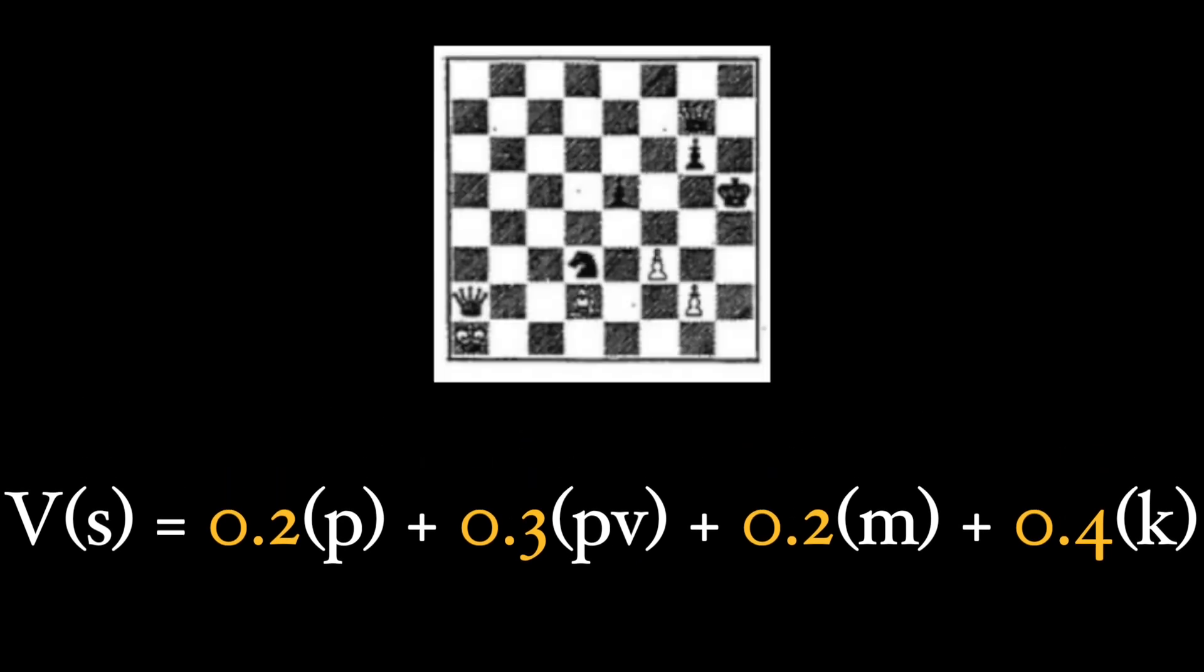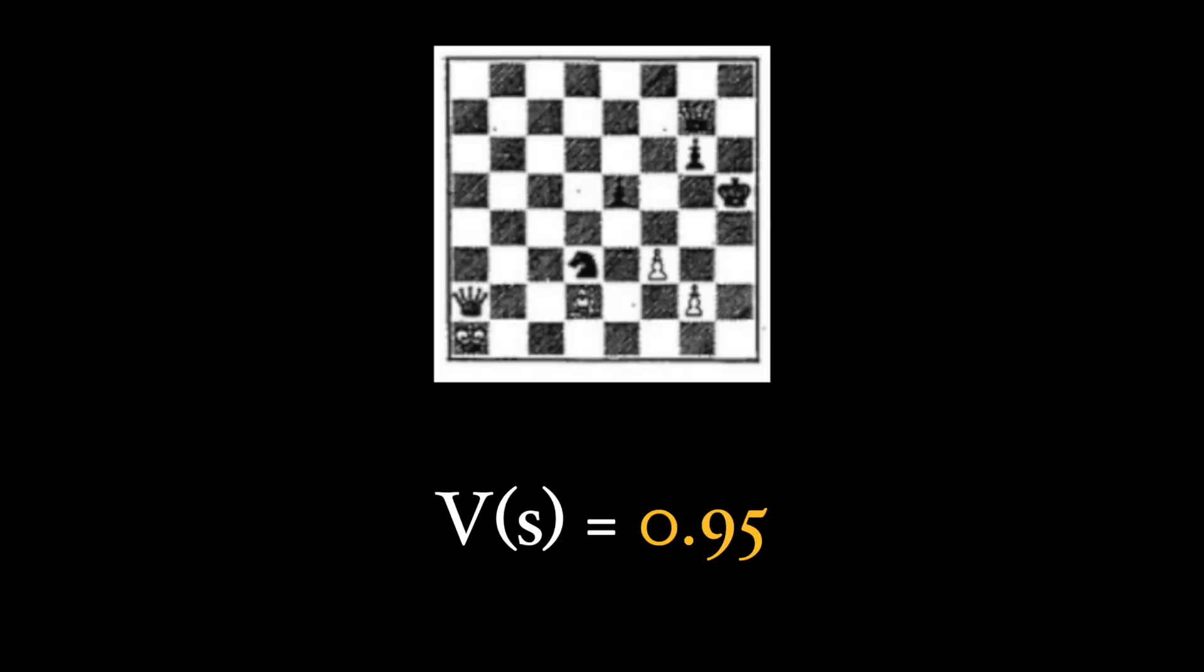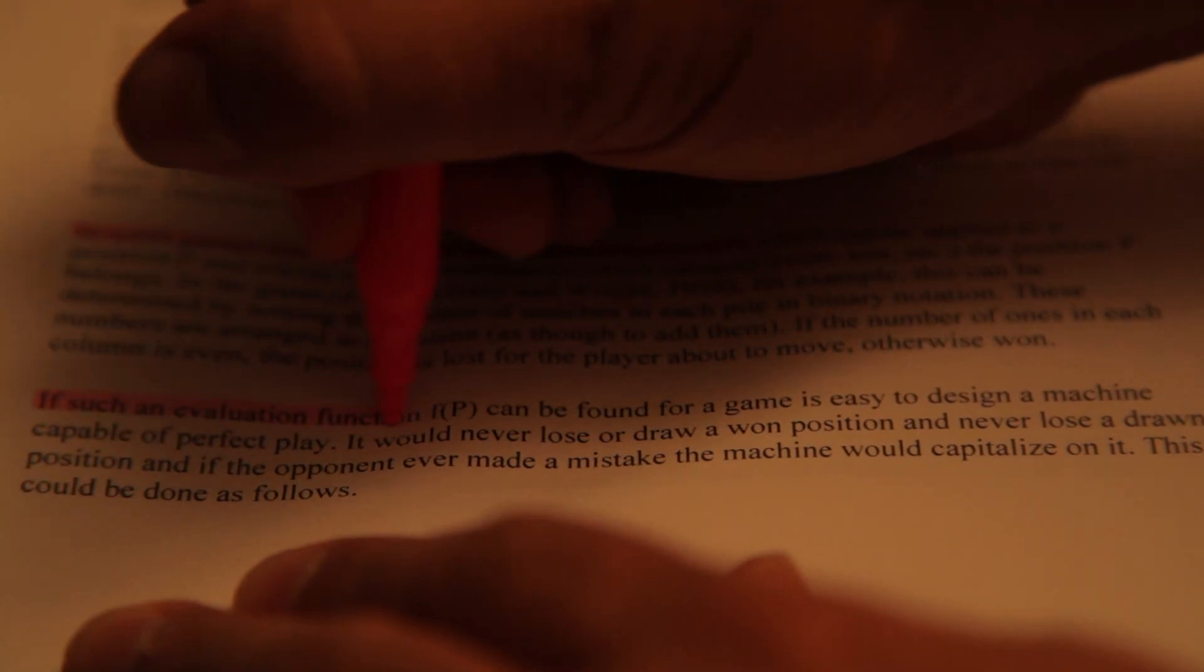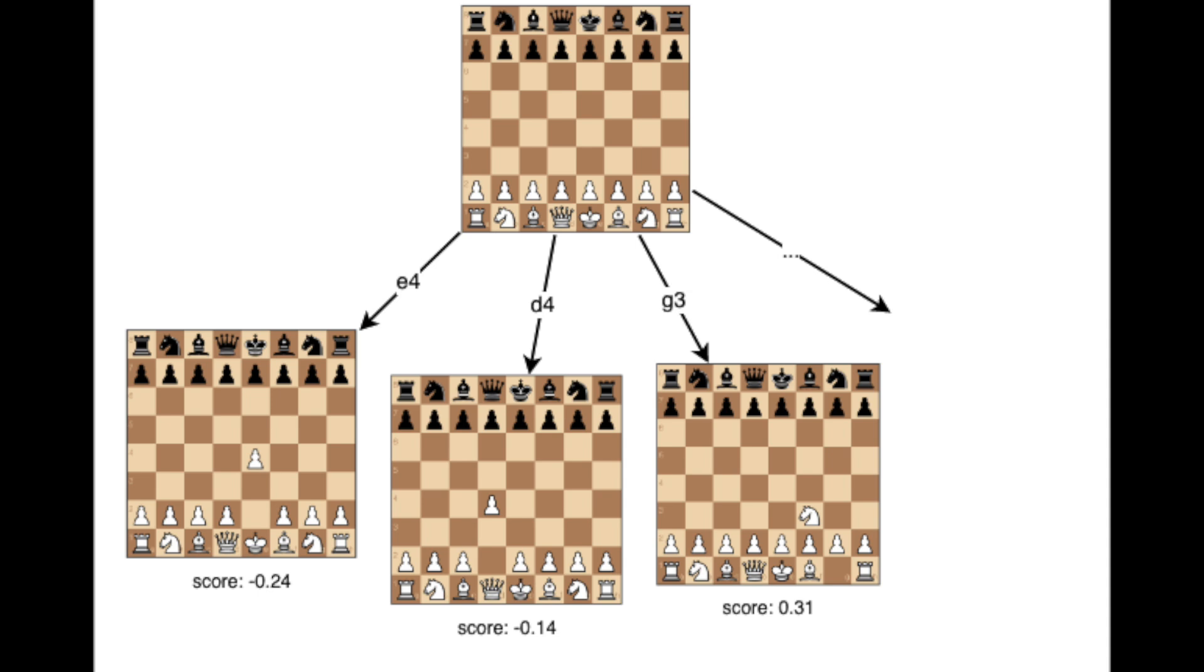And so given any board position in chess, his equation outputs a value for that position. With this value function, you can design a policy simply as follows: at the machine's turn to move, it calculates the value for each possible next move and takes the highest value move, known as a greedy strategy.